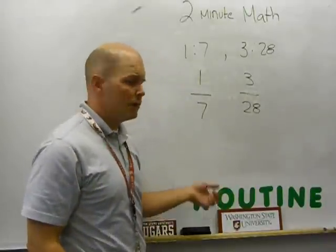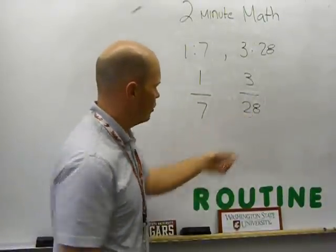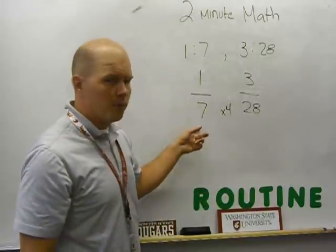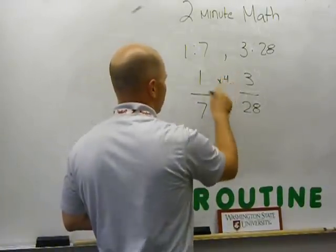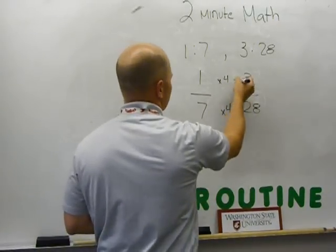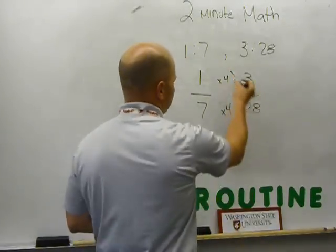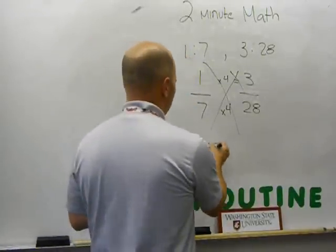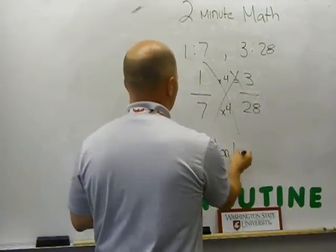I like to start with my denominator. So, in this case, I take 7 times 4 is equal to 28. Now, I'm going to look up here and see if I can take my 1 times 4 to equal 3. However, 1 times 4 does not equal 3. Therefore, they do not share a constant factor and they are non-proportional.